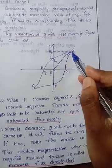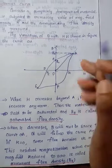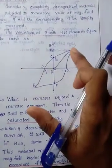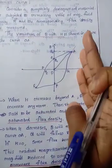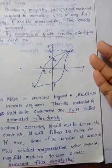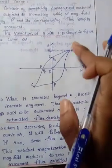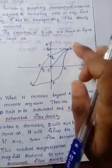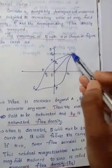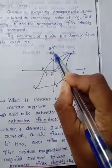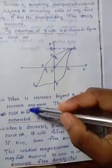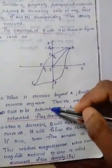Point A is the saturation point. We add extra amount of field but there is a limit — the maximum value will be attained. The field will not increase beyond this point. This maximum value is known as the saturated flux density. The material is said to be saturated.